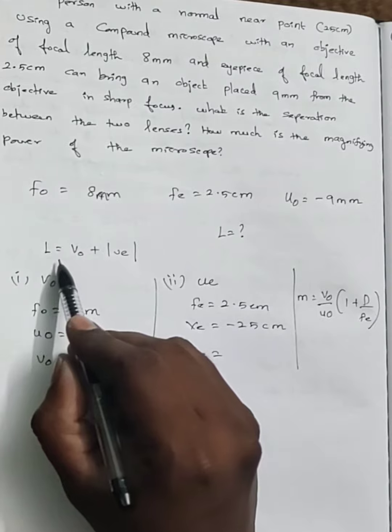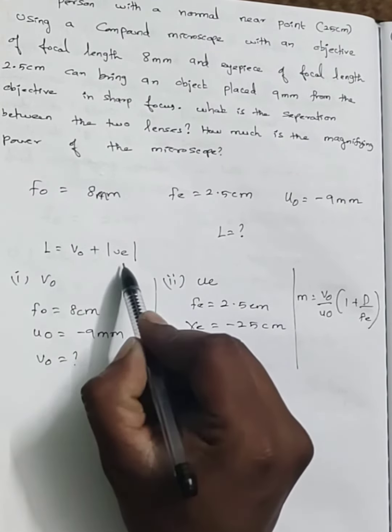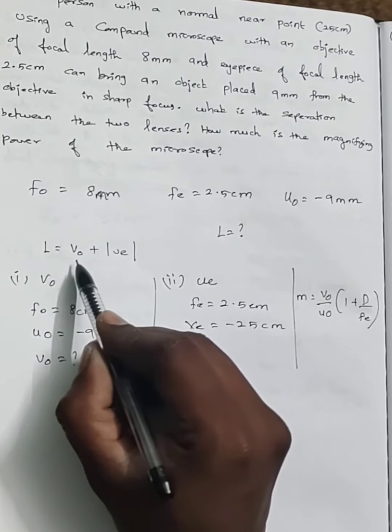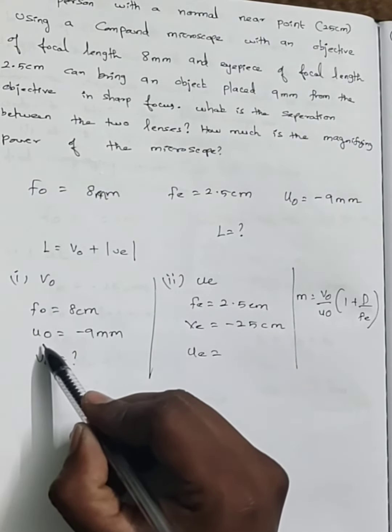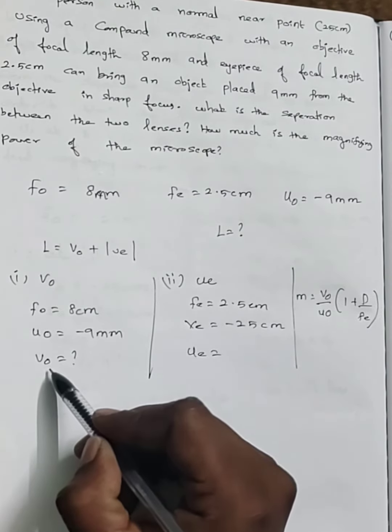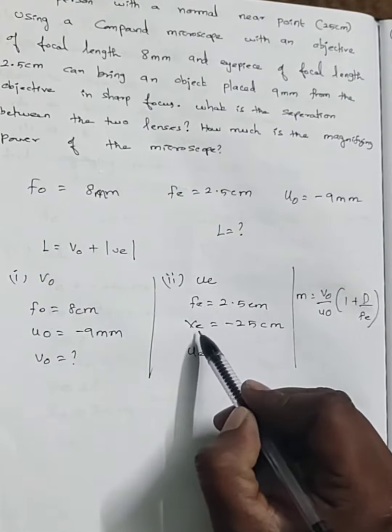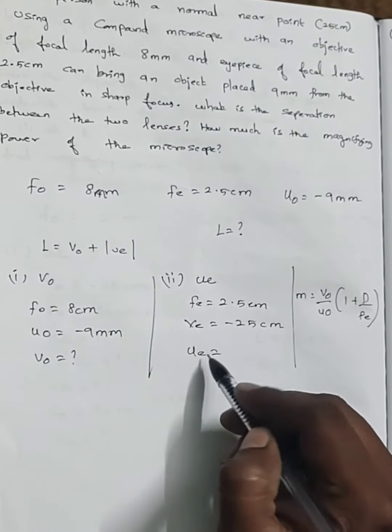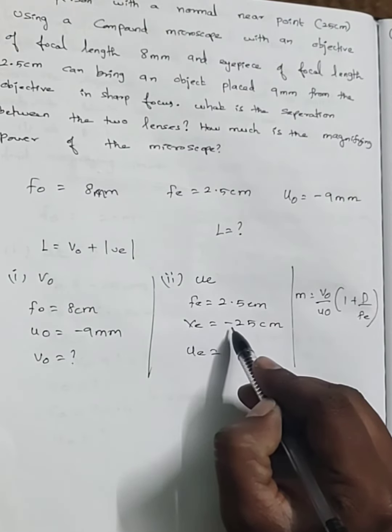For finding L in this case, the formula is L equals V0 plus modulus of UE. So we need to find V0 and UE separately. First, for finding V0, we have F0 and we have U0, so we need to find V0. Then for finding UE, we have FE and we have VE, and we need to find UE.